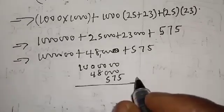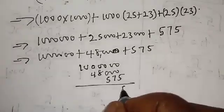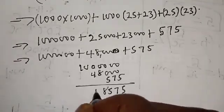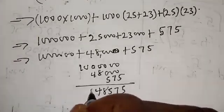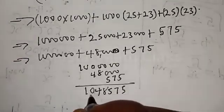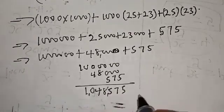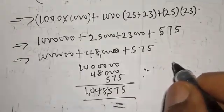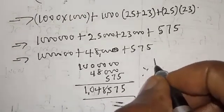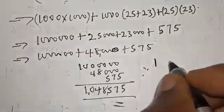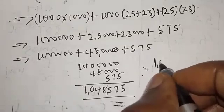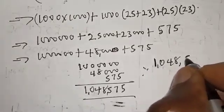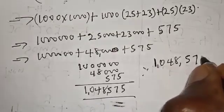If you add everything together, we have 1,048,575. Therefore, our final answer is 1,048,575.